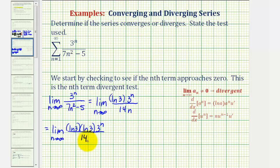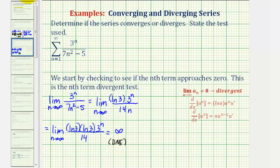We'll notice in this case, finally our denominator is a constant, but the numerator that contains n would approach infinity as n approaches infinity, and therefore this limit is approaching positive infinity, which does not exist and, of course, is not equal to zero. And therefore, by the nth term divergent test, the given series diverges.